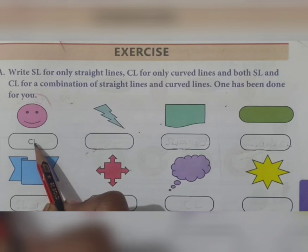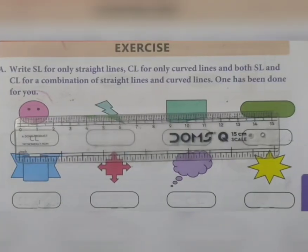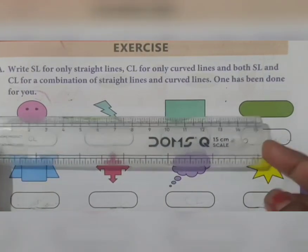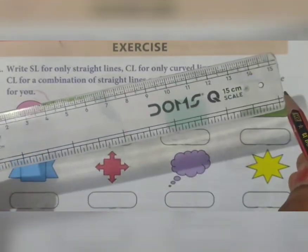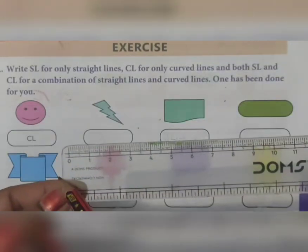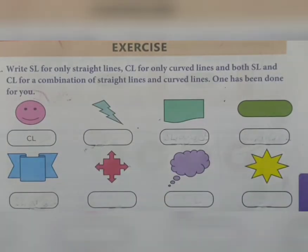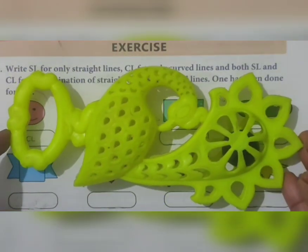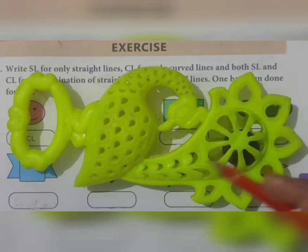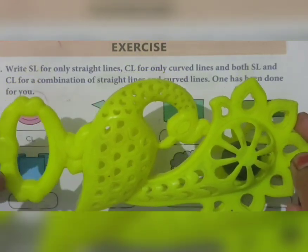Now I will show you one example. This scale is made up of only straight lines - straight line, straight line, straight line. Now one more: this toy is made up of curved lines only. There are no straight lines. This is the difference between curved line objects and straight line objects.